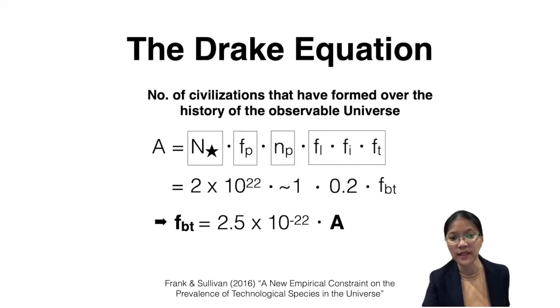So as we said, we actually have a good idea of the first three factors. The N star, the number of stars, is around 10 to the 22. We also know the fraction of these stars that form planets, and that's almost a factor of one. And then the third one is the average number of planets that live in the habitable zone of these stars, and that's around 0.2.